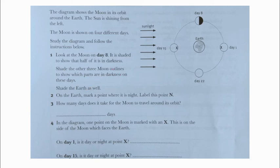Shade the other three moon outlines to show which parts are in darkness on these days. Jadi nomor satu kita disuruh melihat bulan pada hari ke-8, ada bayangannya yang setengah masih gelap karena tidak tersinari cahaya. Kita disuruh mewarnai yang lain. Kalau di posisi hari ke-15, darknessnya ada di sebelah sini. Di hari ke-22, darknessnya ada di sebelah sini. Di hari pertama, darknessnya ada di sebelah sana.